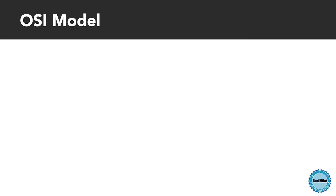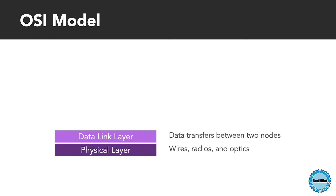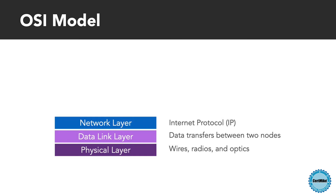The OSI model describes networks as having seven different layers. The first layer, the physical layer, is responsible for sending bits over the network using wires, radio waves, fiber optics, and other means. The second layer, the data link layer, transfers data between two nodes connected to the same physical network. The third layer, the network layer, expands networks to many different nodes. The Internet Protocol works at the network layer.